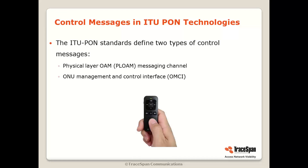When we talk about control messages in the ITU PON technologies, there are actually two types of messages. One is called the PLOAM, Physical Layer OAM, which handles activities like activation and deactivation of ONUs, exchange of keys for encryption, and so on. The second type are the ONU Management and Control Interface, OMCI, which is the subject of this video.